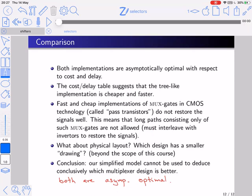Therefore, when you have long paths consisting of only these type of pass transistors, then you have to interleave them with inverters that do restore the signals well. And therefore actually the MUXs become slower. It's a complicated issue. Comparing these two designs is highly technology-dependent and beyond the scope of this course. What about the physical layout? You may ask, in VLSI I'm actually interested in the area that the circuit consumes. Which circuit has a smaller drawing? Again, this is beyond the scope of this course. I want to conclude that our simplified cost and delay model cannot be used to deduce conclusively which of these two multiplexer designs is better. However, both are asymptotically optimal, and that is good enough for us at this stage. Thank you very much.